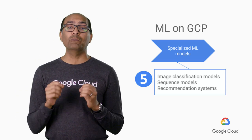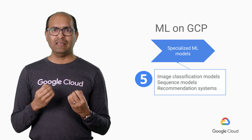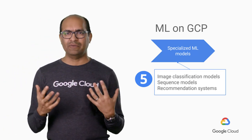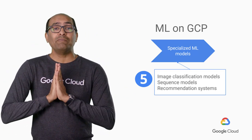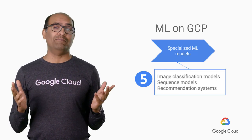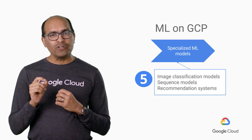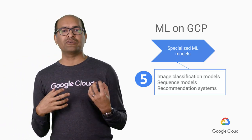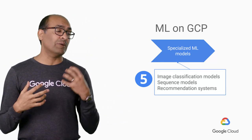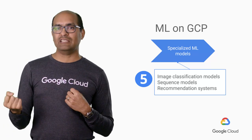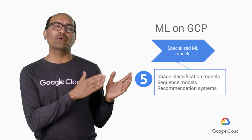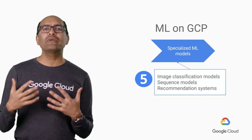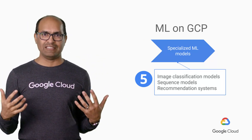Recommendation systems are how you build personalized algorithms, and it's something that most ML engineers build at some point in their careers. In fact, it might be the only ML system that many people will build. But in order to build powerful recommendation engines, it turns out that you need to understand tools and tricks borrowed from images and from sequences. That's why we look at recommendation engines pretty much at the end of the specialization.